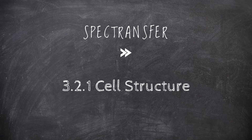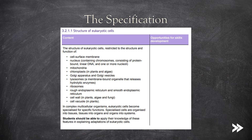Hello and welcome to SPECTransfer. Today we'll be looking at 3.2.1 cell structure from the AQA A-level biology specification. Starting off with the structure of eukaryotic cells, this is basically just learning some details about the structure and function of a number of different organelles, as well as a small part on cell specialisation.